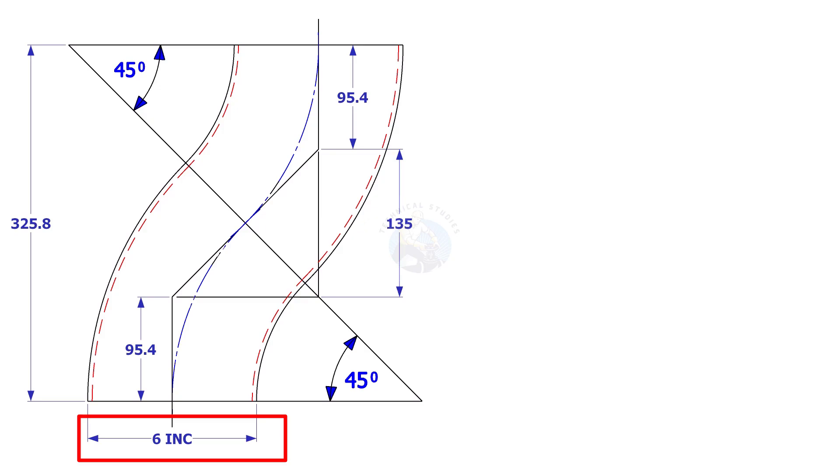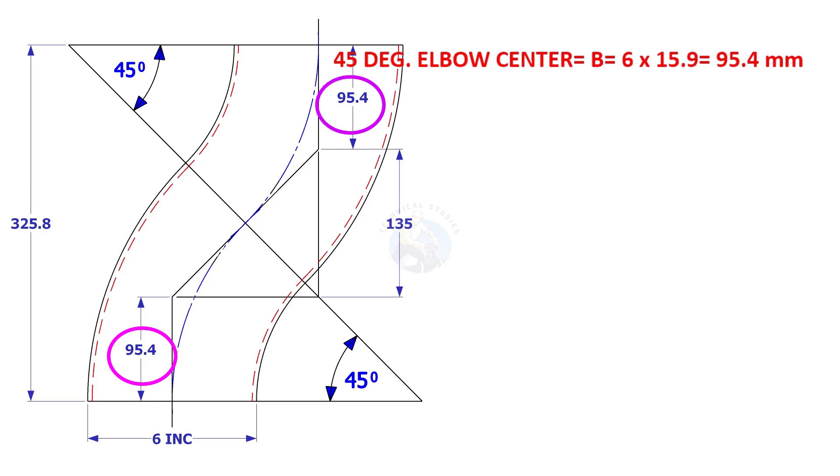In another example, the size of the elbow is 6 inch. 6 inch 45-degree elbow center is 6 multiplied by 15.9, which is 95.4 millimeters.